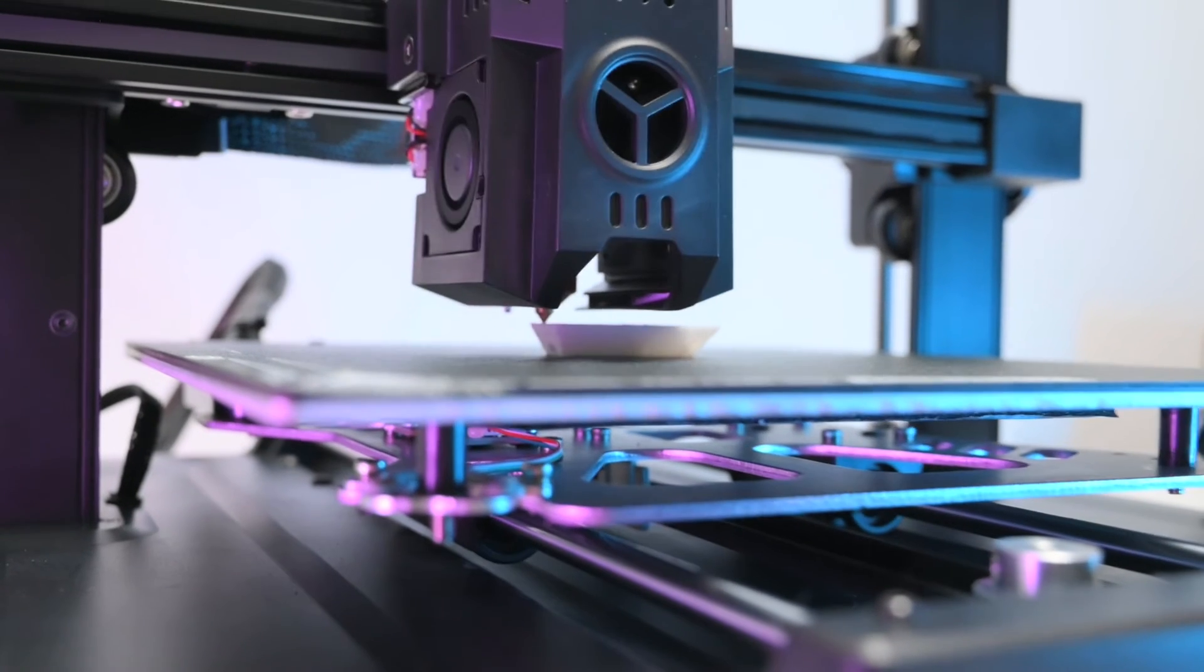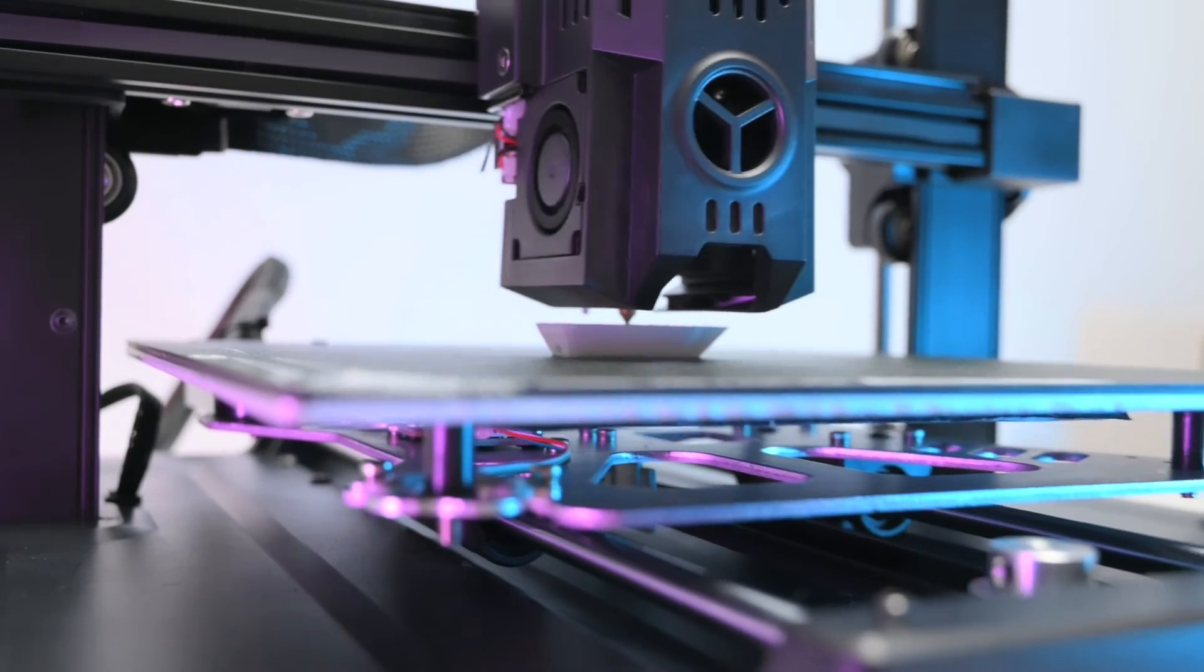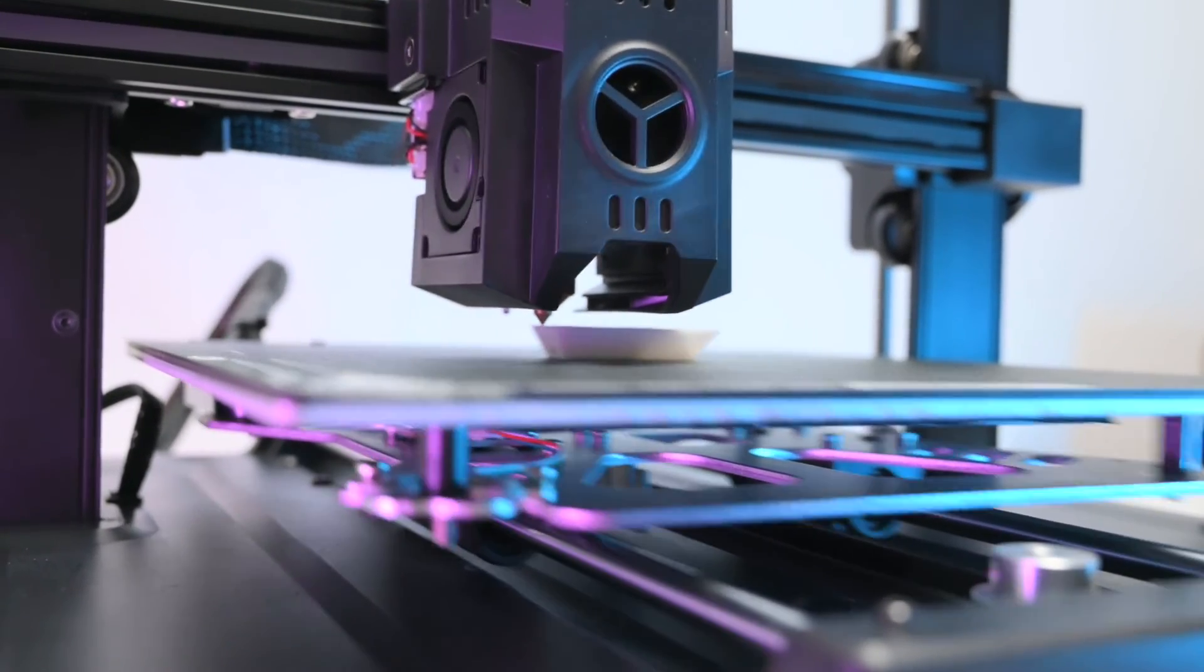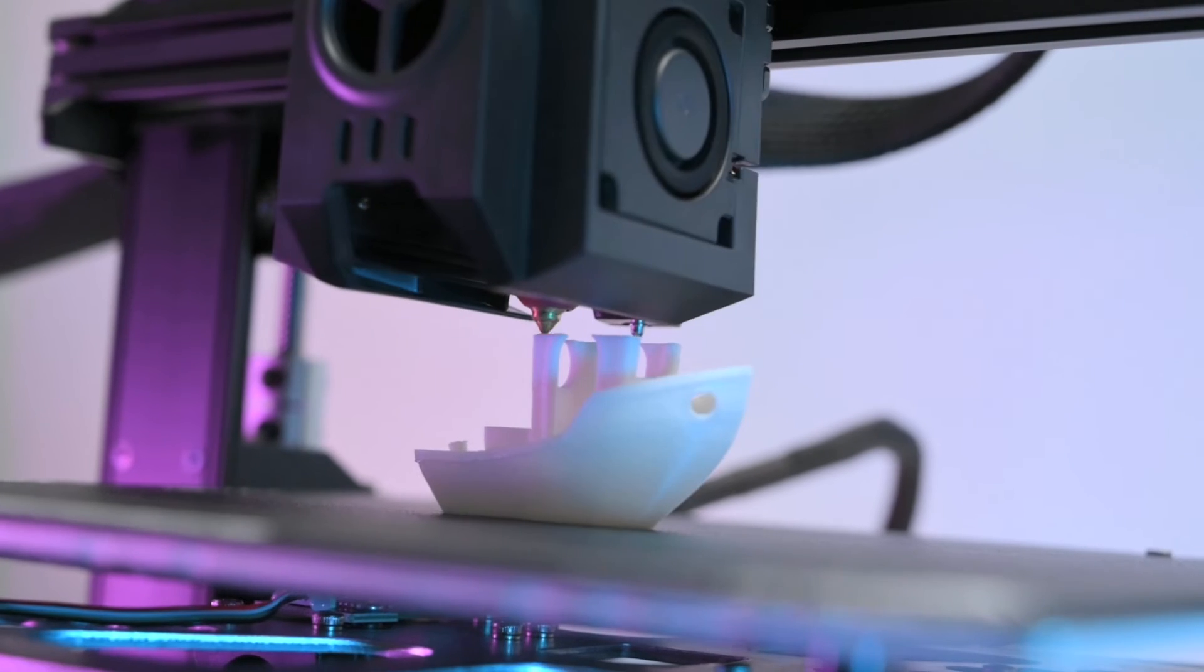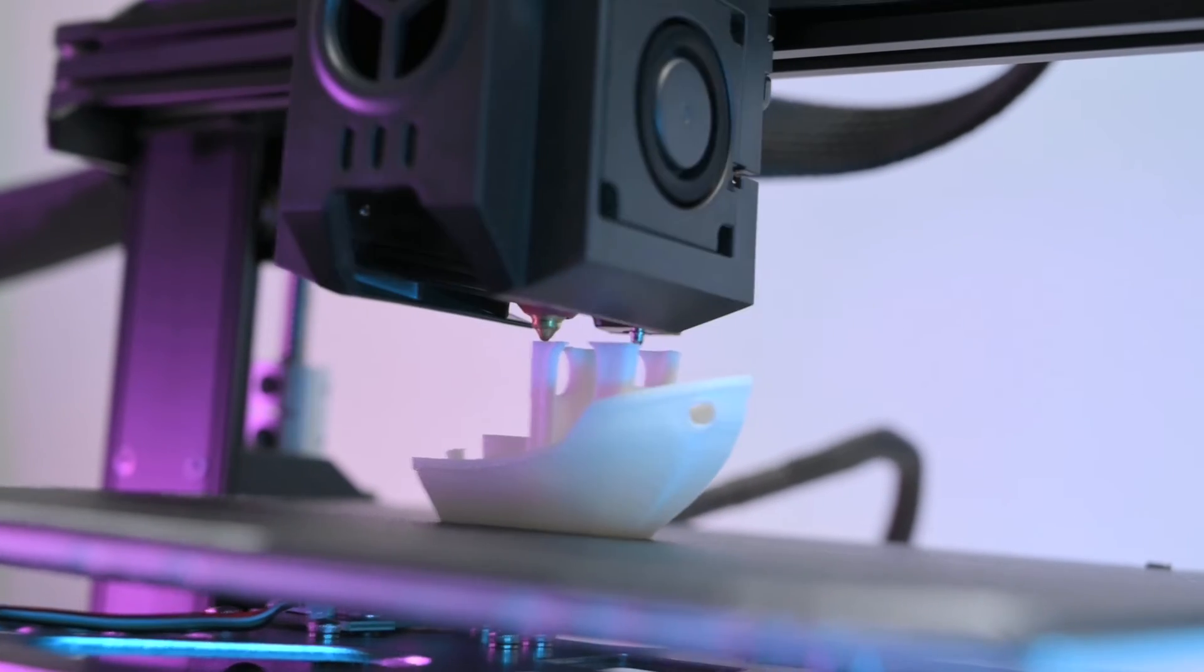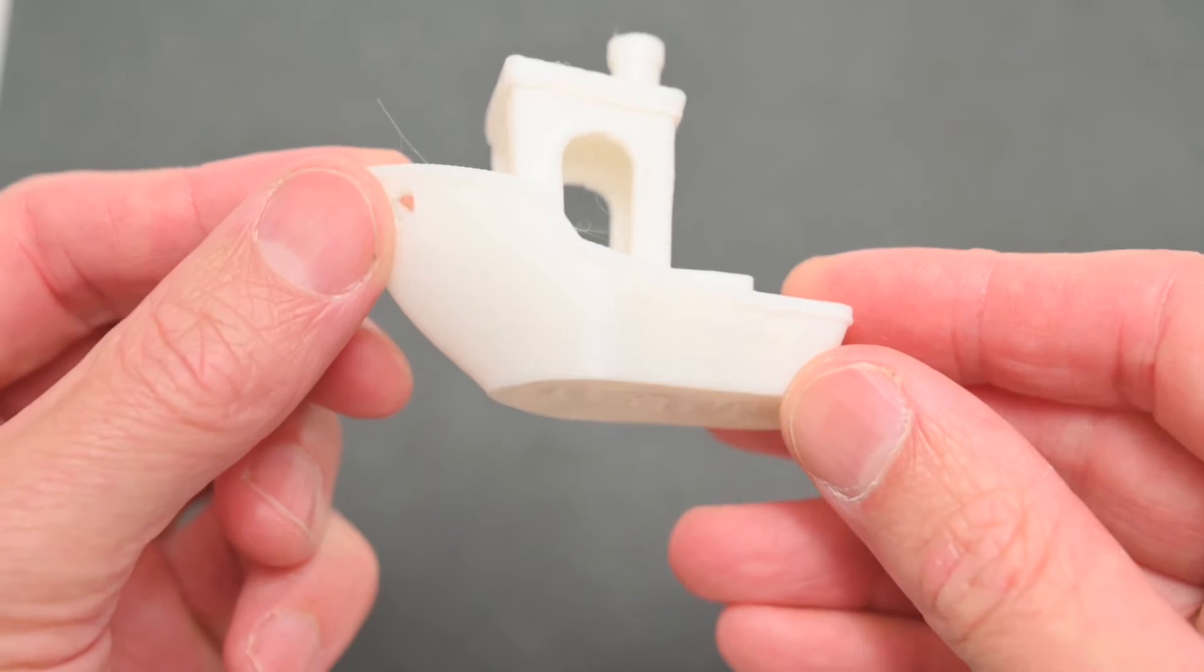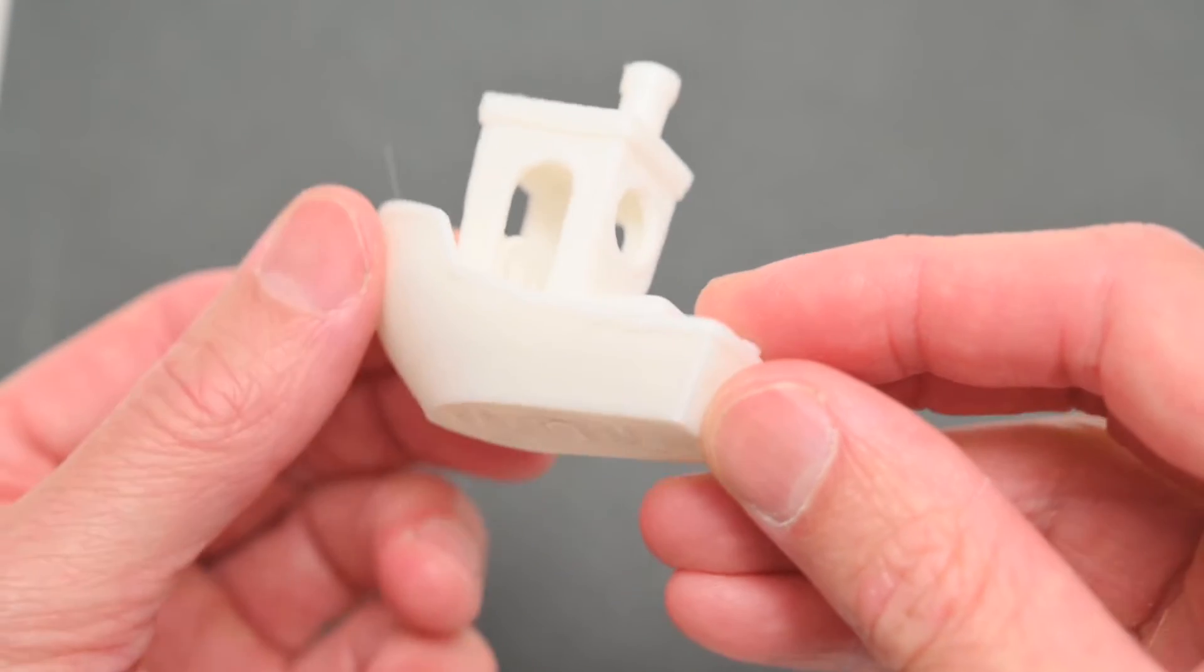The first print is the Benchy boat which is included sliced on the USB stick. This is printed with the white Hyper PLA filament. Starting the print process is simple and having the printer take care of the hands free bed level makes the process as easy as possible. The print took 20 minutes and this included the automatic calibration and bed level. Overall it turned out to be a decent print that printed quickly.